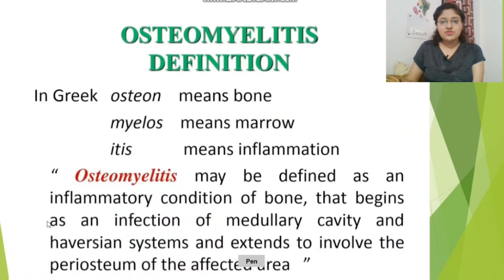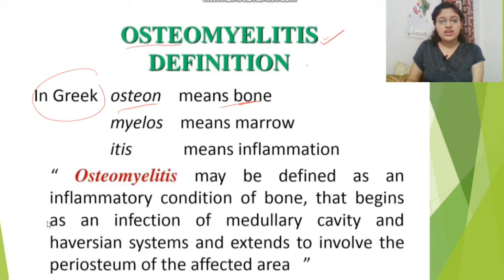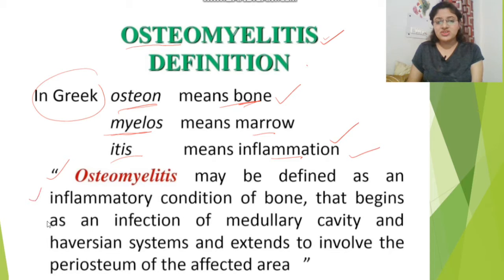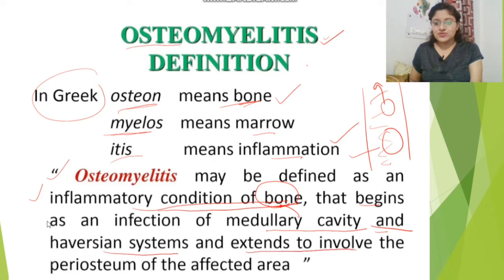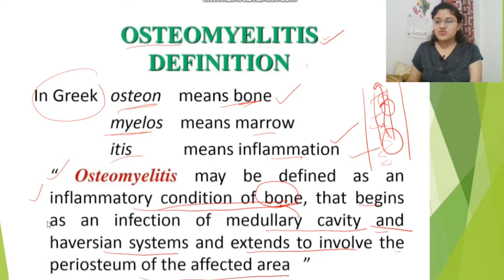Let's get started. First, let's see what osteomyelitis means. Osteo comes from the Greek word 'osteon' which means bone, 'myelos' means marrow, and 'itis' means inflammation. So osteomyelitis is basically the inflammation of the bone. The definition: osteomyelitis is defined as an inflammatory condition of bone that begins as an infection of the medullary cavity — where infection starts — and further leads to inflammatory condition of bone.